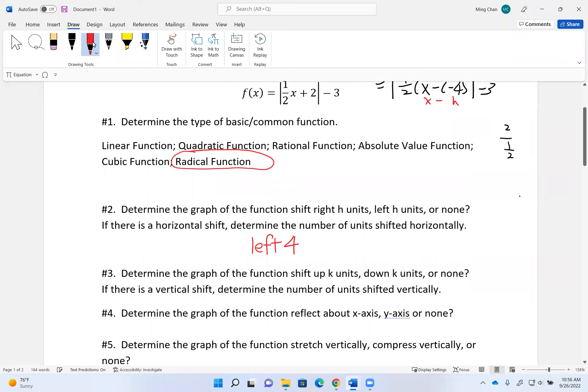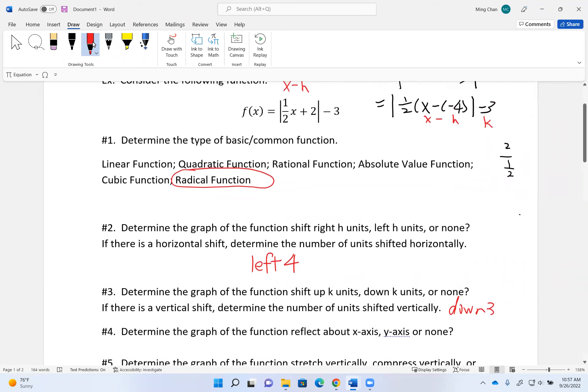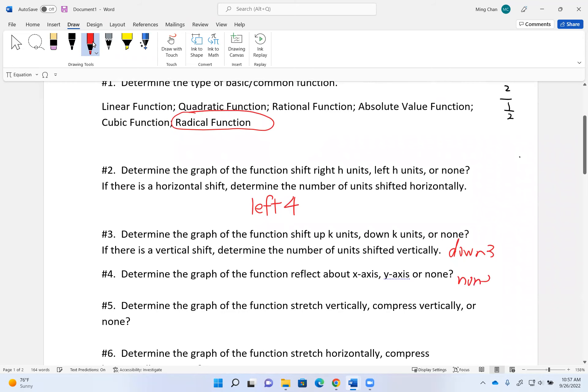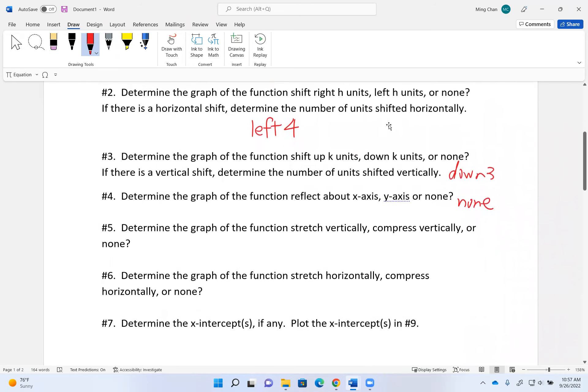Number three is still down three. The k is right here. Reflection about the x and y axis is still none because there's no negative sign in front of the absolute value or in front of the x.